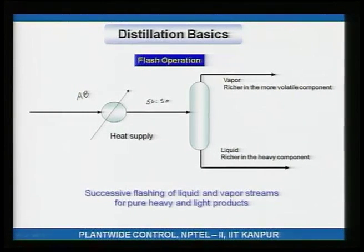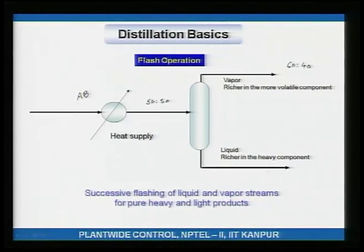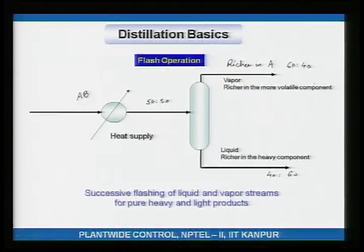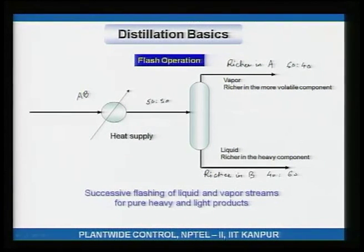Since A is more volatile than B, the vapor will be approximately 60-40 in favor of A, and the liquid bottom will be approximately 40-60, richer in B. The vapor is richer in the more volatile component A, and the bottom is richer in the heavy component B.